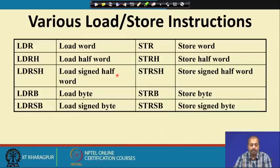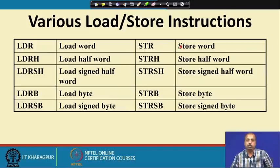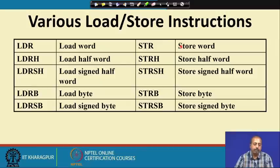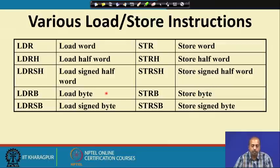Next we look at the STR instruction. LDR is for loading and STR is for storing — just the other way. You can say STR some register to some memory location, and the content of that register will be stored in the memory location. Variants include LDRH load half-word, STRH store half-word, LDRSH load signed half-word, LDRB load byte, and STRB store byte.